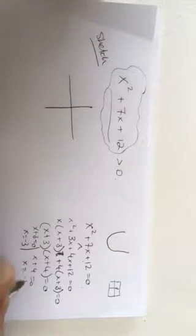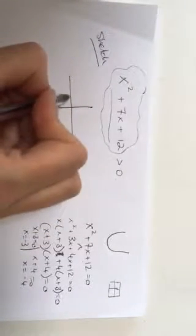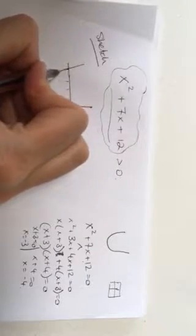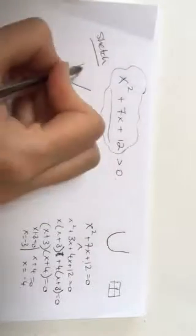And the other root is minus 4, which means that minus 1, minus 2, minus 3, minus 4 probably looks something like that - a U-shaped graph.